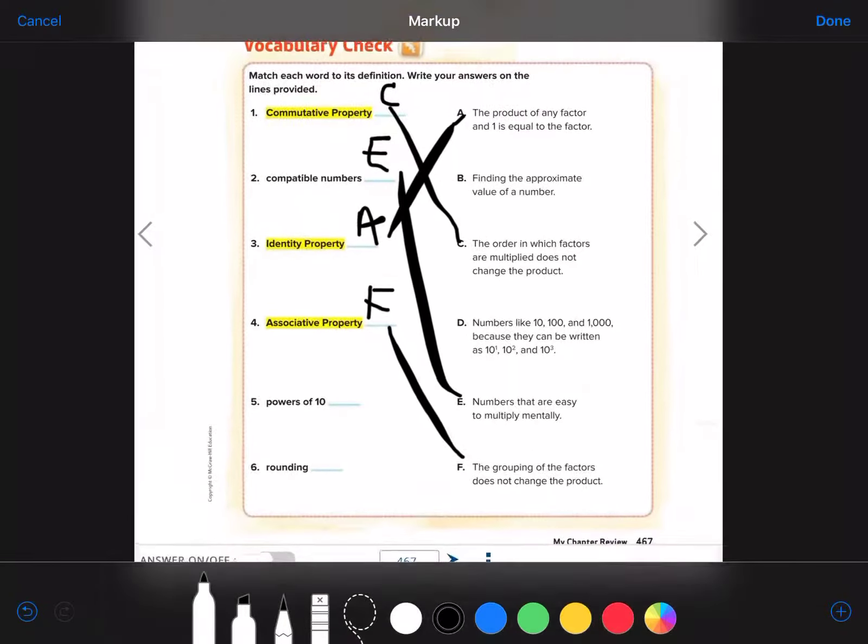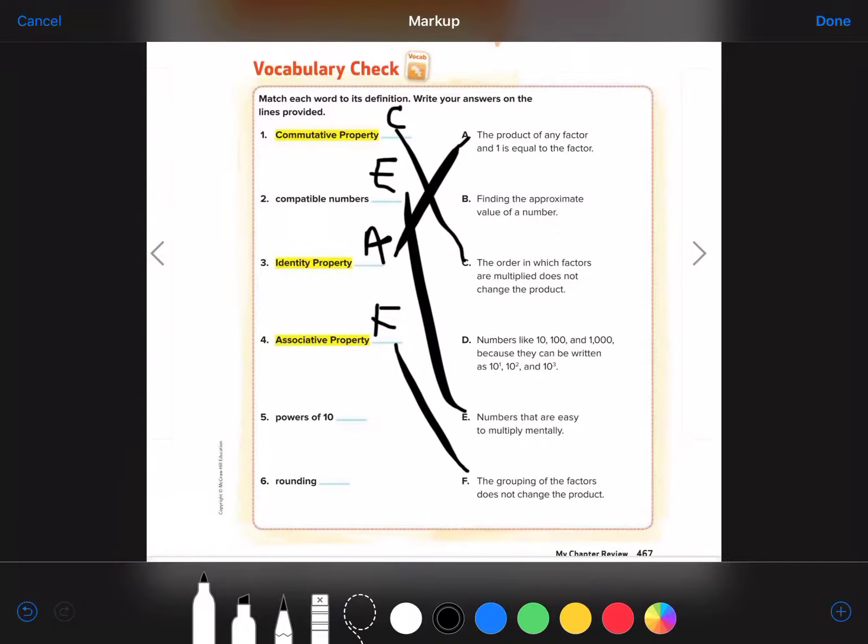Powers of 10. Numbers like 10, 100, and 1,000. They can be written as 10 to the first, 10 squared, or 10 to the cubed. It would be D.